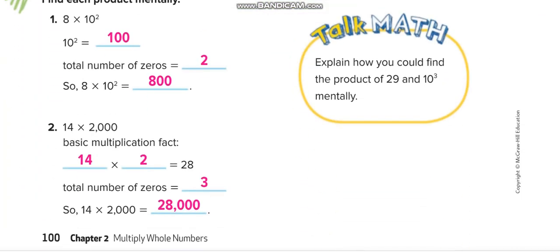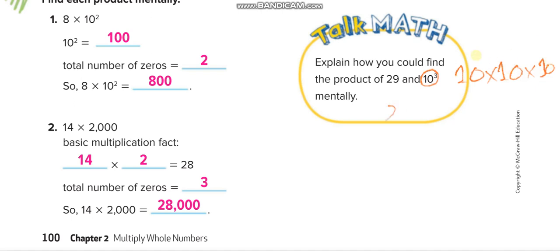Next: eight times ten to the power two — ten times ten equals one hundred — so remove two zeros, eight times one equals eight, put two zeros back: eight hundred. Then fourteen times two thousand: twenty-eight, remove three zeros, put three zeros back — twenty-eight thousand. Twenty-nine times ten to the power three means ten times ten times ten equals one thousand, so twenty-nine times one thousand.